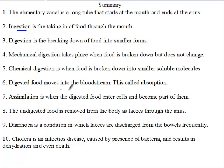The digested food is absorbed into the bloodstream. Once it gets into the bloodstream, the food molecules, or the digested food molecules, will be transported to the cells. Assimilation is when the digested food enters the cells.